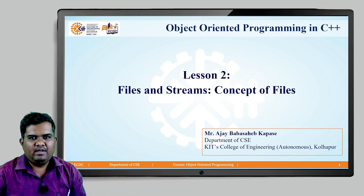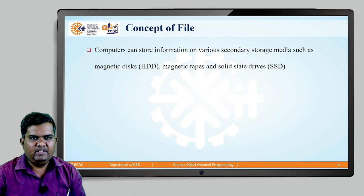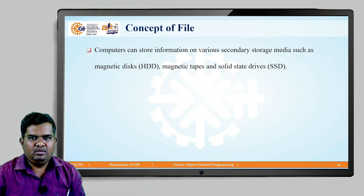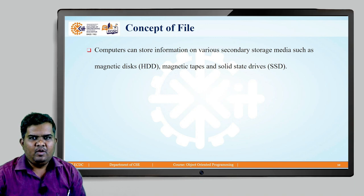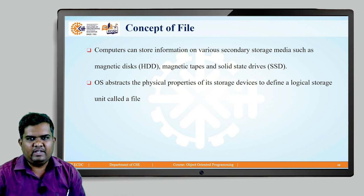Let us try to understand what we mean by the concept of a file. Whenever we store information, the computer stores this information on secondary storage media such as the magnetic disk called the hard disk drive (HDD), magnetic tapes, or modern devices such as solid state drives (SSDs). The operating system abstracts the physical properties of its storage device to define the logical storage unit called the file.